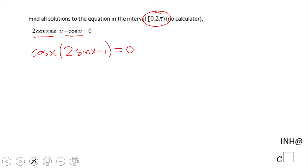We can use the zero product property, which says cosine of x equals 0, the first factor can be 0, or the second one can be 0.